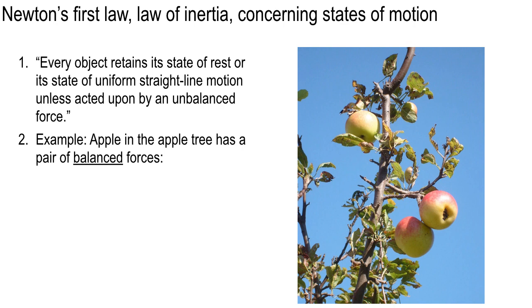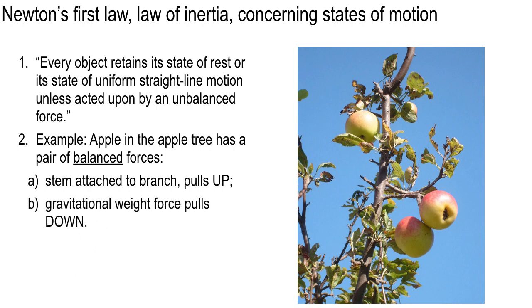So for an example, an apple and an apple tree, you have a pair of balanced forces. You have the stem attached to the branch. The stem pulls up on the apple. The gravitational weight force pulls down on the apple. But it's up there on the branch, and it's getting nice and juicy and ripe. And it's at rest. For the most part. Now, if the stem weakens, it dries out in the autumn, those things will get a little bit crispy. And the right gust of wind comes down, the apple will fall down out of the tree. The balance fails, and down she comes. And if you're sitting underneath the apple tree, and it falls on your coconut right here, just like for Sir Isaac Newton, you might discover the law of gravitation, universal gravitation.